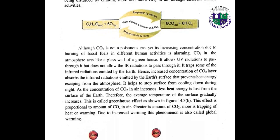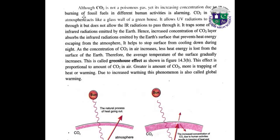Although carbon dioxide is not a poisonous gas, its increasing concentration due to burning of fossil fuels in different human activities is alarming. Carbon dioxide in the atmosphere acts like a glass wall of a greenhouse — it allows UV radiations to pass through but does not allow IR radiations to pass through. It traps some of the infrared radiations emitted by the earth. Increased concentration of CO2 absorbs infrared radiations emitted by the earth's surface, preventing heat energy from escaping the atmosphere. It helps to stop the surface from cooling down during night. As the concentration of CO2 in air increases, less heat energy is lost from the surface of the earth. Therefore, the average temperature of the surface gradually increases. This is called the greenhouse effect.